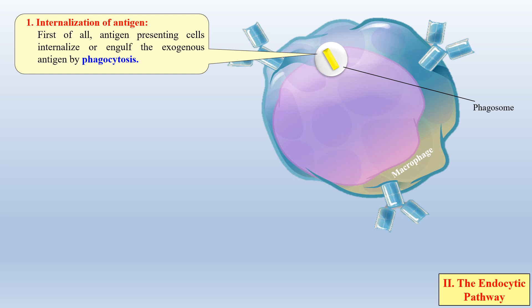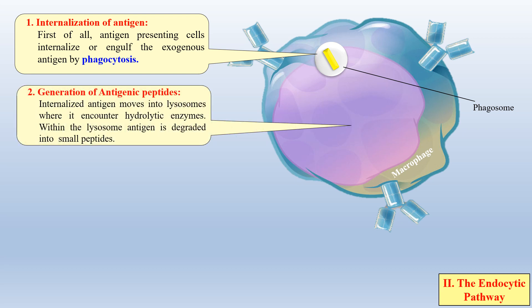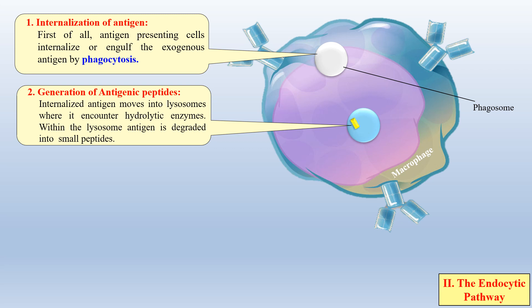First, the exogenous antigen is engulfed by the phagosome. In the next step, the antigenic peptides will be generated. For this, the lysosome — which contains hydrolytic enzymes — will perform the function of creating antigenic peptides. The exogenous antigen moves from the phagosome to the lysosome, as you can clearly see in this animation, and inside the lysosome it is degraded into small peptides via the hydrolytic enzymes. As you can see, it is degraded into small antigenic peptides.